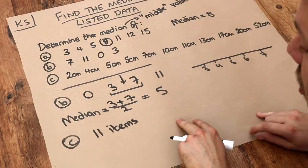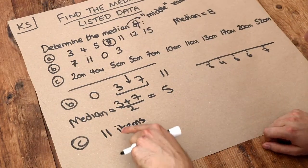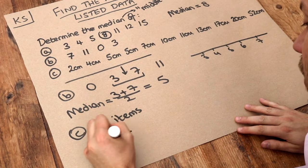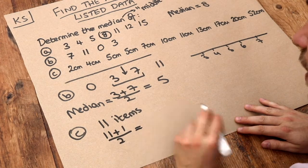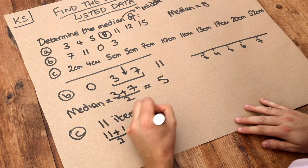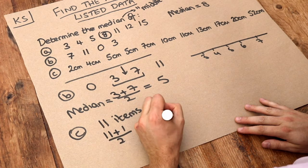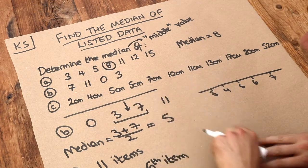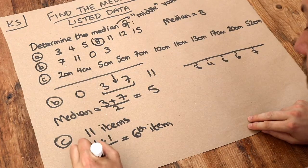And to find the position of the middle one without having to count inwards, what you can do is add 1 to it and then divide it by 2. So we add 1 to it and divide by 2. We want the 6th item: 11 plus 1 over 2 is 6. And what is the 6th item? 1, 2, 3, 4, 5, 6 - it's 10 centimeters. So the median is equal to 10 centimeters.